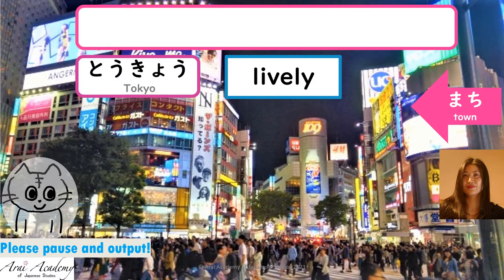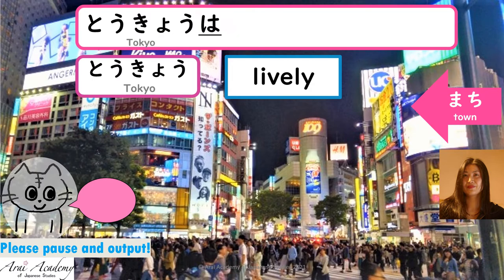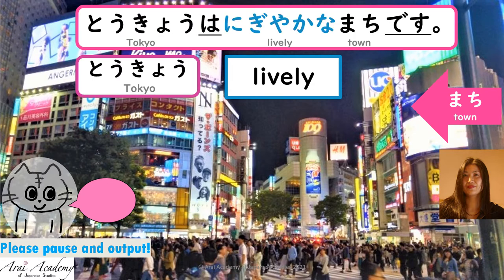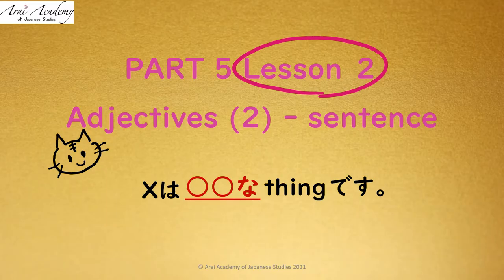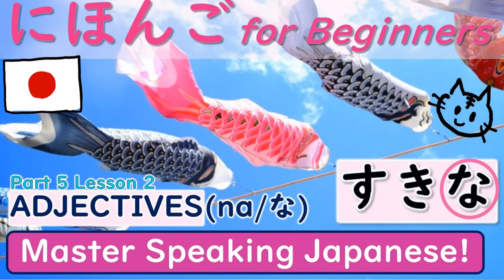Also, you can say, 'Tokyo is a lively town.' Yes — Tokyo wa nigiyakana machi desu. Nigiyakana modifies the following word, machi. We studied adjectives ending with na plus thing in Part 5, Lesson 2.